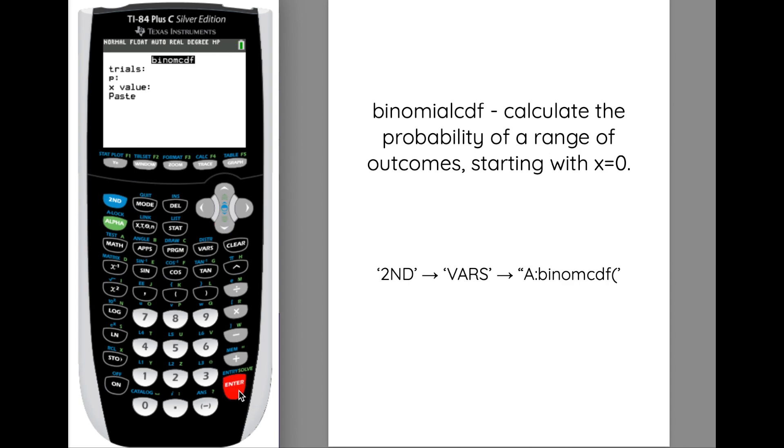the one thing we need to keep in mind is trials is the same idea, probability we use a decimal, and then the X value. What it will do is it starts adding all the probabilities starting with X equals zero up to and including the number that you put in here. So if you put the value of three in there, it's going to add the probability of zero, one, two, and three happening.